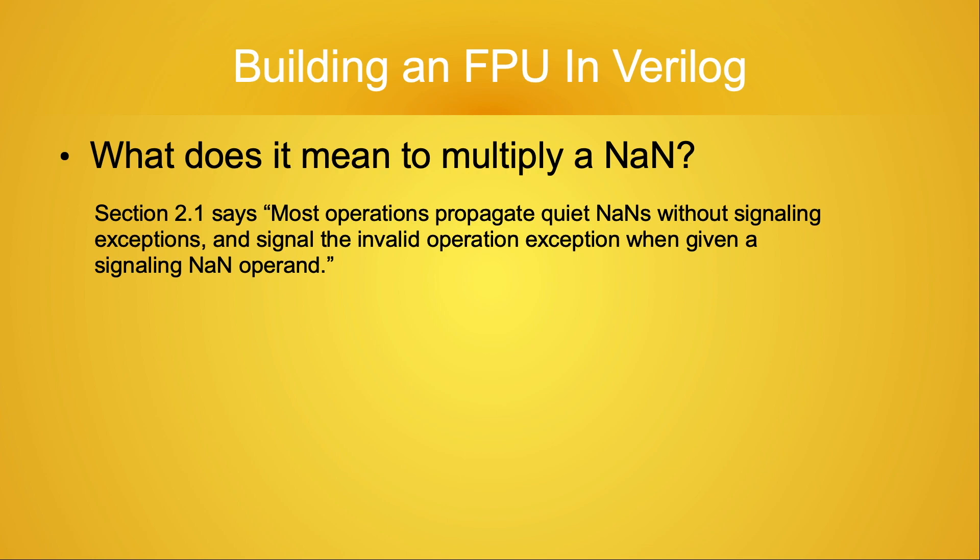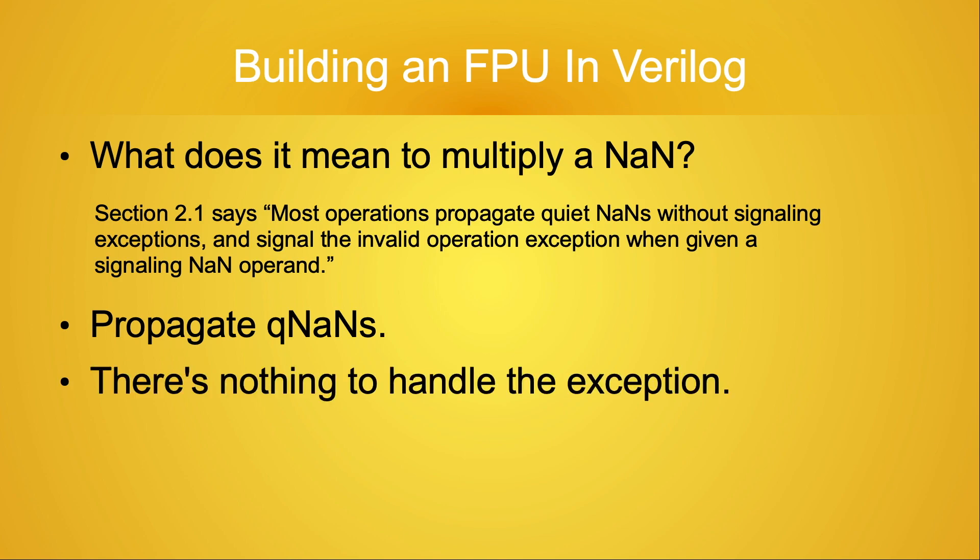For NANs, the standard says that most operations propagate quiet NANs without signaling exceptions and signal the invalid operation exception when given a signaling NaN operand. If we're trying to multiply quiet NaN, the standard says to propagate it, that is, return the quiet NaN as the product of the multiplication. Being able to signal an exception in the case of an sNaN being passed as an operand to the multiply module assumes that there is a CPU which can process that exception.